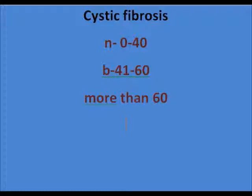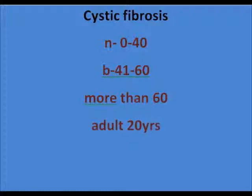For adults more than 20 years of age, a sweat chloride value of more than 70 is consistent with cystic fibrosis.